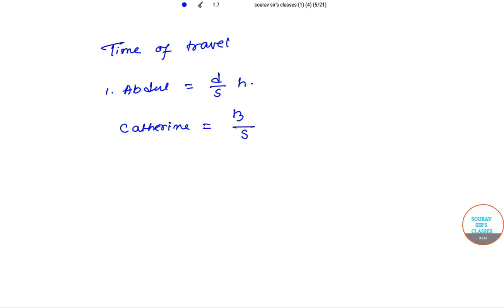Okay, that means there is a twist. Catherine will travel d/3, I'm writing it in this way so it will be easier to understand, divided by s/3.